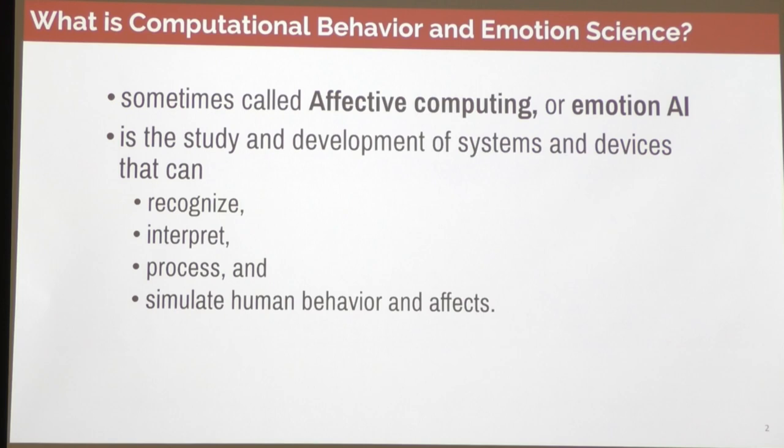What is behavior and emotion science? Basically we want to get computers to read and understand human emotions, and also to make that information available in real time so technology and devices can use that information to make decisions. If you think about human intelligence, it's not just about your IQ, your cognitive intelligence — it's also about your emotional intelligence, your EQ.